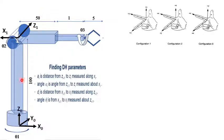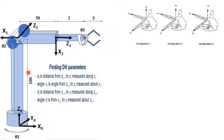If you match the theta two direction with your right-hand palm, the thumb points inward toward the screen. X1 should be perpendicular to both Z0 and Z1 — using the right-hand rule: thumb is Z0, index finger is Z1, and middle finger points toward X1. For the prismatic joint, Z2 is along the axis of translation, and X2 should be perpendicular to both Z2 and Z1.